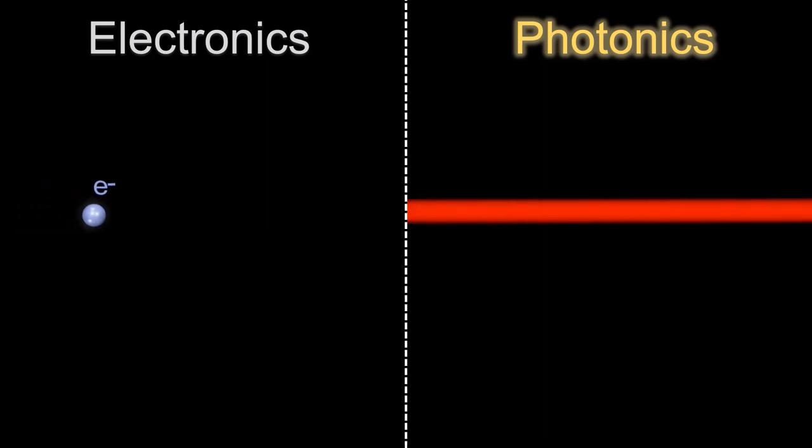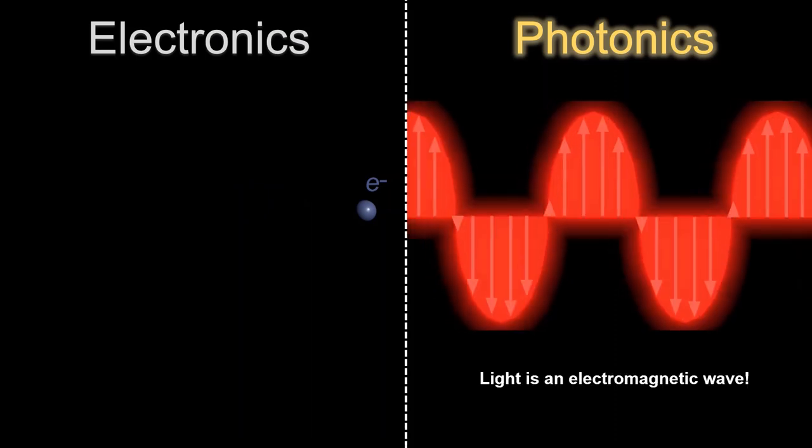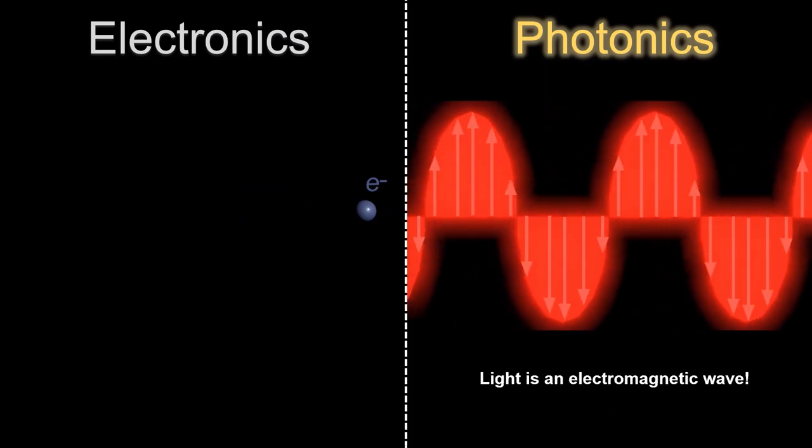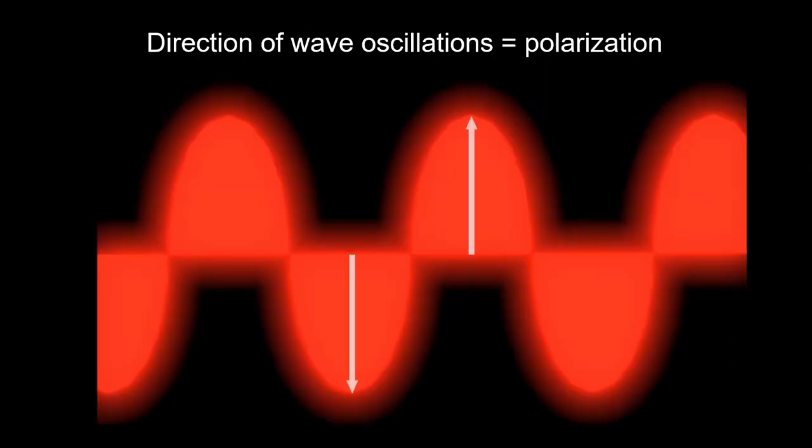Although we might think both electrons and light propagate in a straight line, light is indeed considered as an electromagnetic wave, which refers to the oscillations of electric field. Simply speaking, it has inherent wave properties, such as polarization.